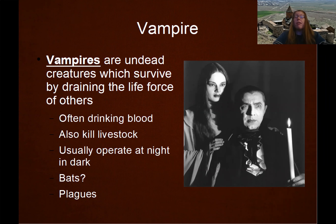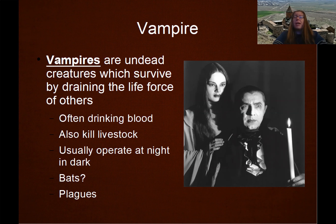So what is a vampire? A vampire is an undead creature which survives by draining the life force of others. This doesn't automatically mean that it has to be blood. In other cases, it's energy; in other cases, it's life force, but it has to be some kind of draining, and this is done by an undead creature in order to maintain its own existence. Usually they operate at night in the dark. It is associated with bats or plagues because it is associated with death and the draining of life force. People getting sick from a plague and losing energy and becoming weaker and weaker would seem like something is coming in every night and draining that life force. So oftentimes vampires are more associated with that gradual weakening and sickness than with any actual specific creature, or specifically with blood.